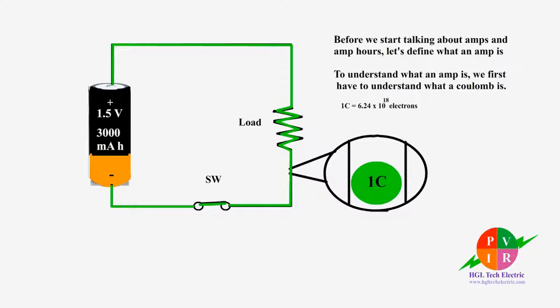As we can see, there are many electrons in one coulomb of charge. If one coulomb of charge passes a certain point in one second, we can say that there is one ampere.